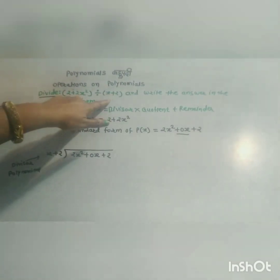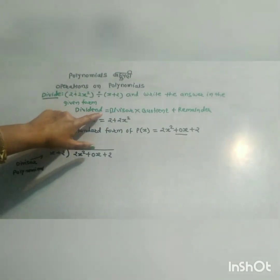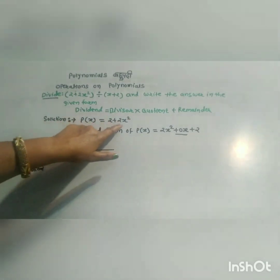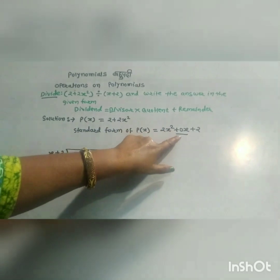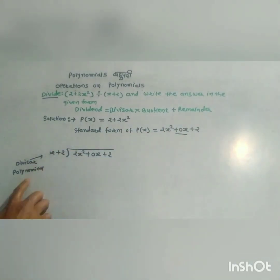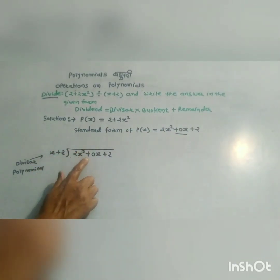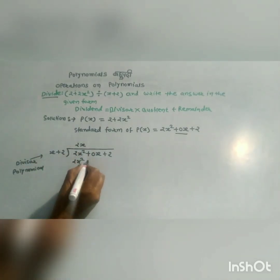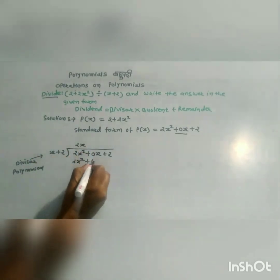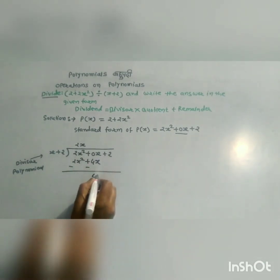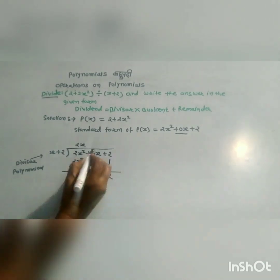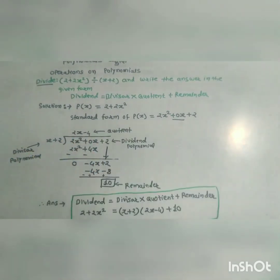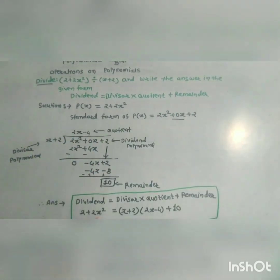Divide 2 plus 2x squared by x plus 2, and write the answer in the form: dividend equals divisor into quotient plus remainder. Polynomial p(x) equals 2 plus 2x squared; write in standard form: 2x squared plus 0x plus 2. The divisor is x plus 2. Dividing: 2x times x gives 2x squared; 2x times 2 gives 4x; then negative 4 times x gives negative 4x; remainder is 10.